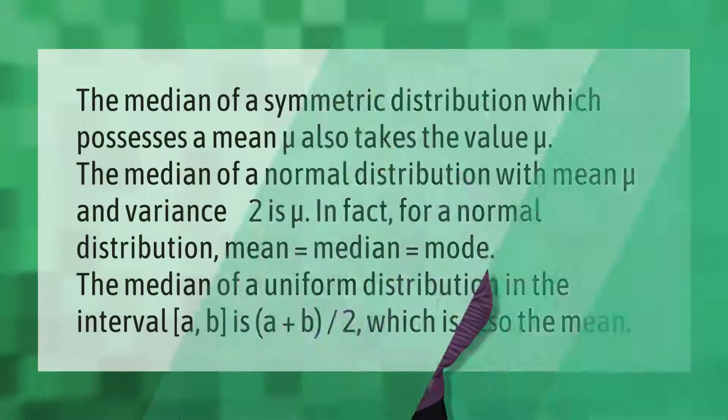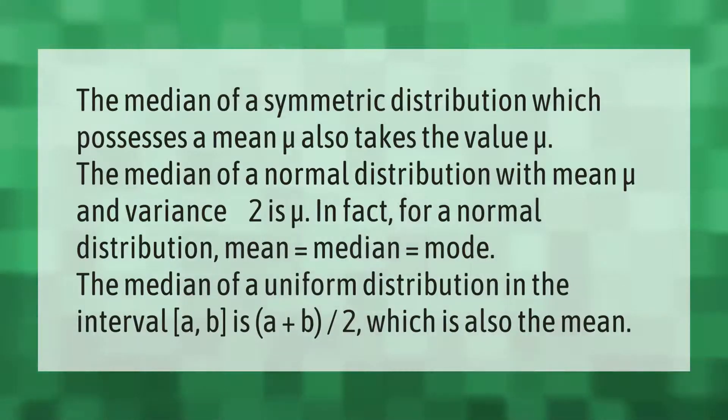The median of a symmetric distribution which possesses a mean μ also takes the value μ. The median of a normal distribution with mean μ and variance σ² is μ. In fact, for a normal distribution, mean = median = mode. The median of a uniform distribution in the interval [a, b] is (a+b)/2, which is also the mean.